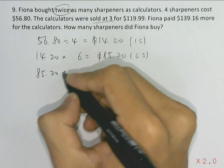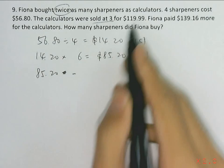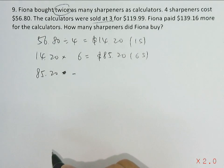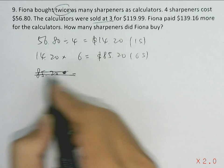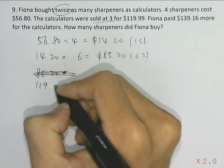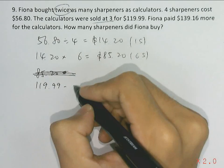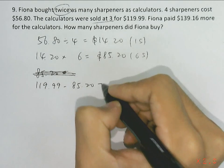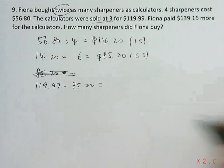Actually, since the calculators cost more, we will take the price of the calculators subtracting off the price of the six sharpeners, $85.20. So that gives us the price difference of $34.79 per group.